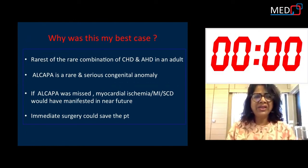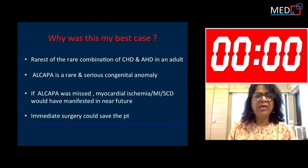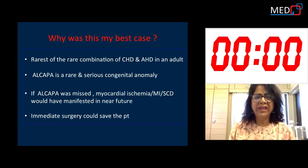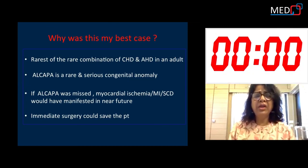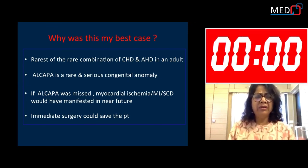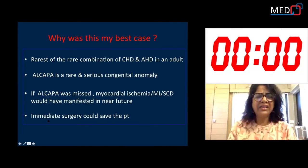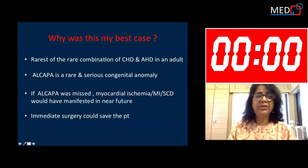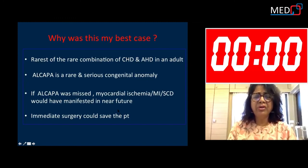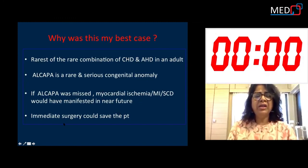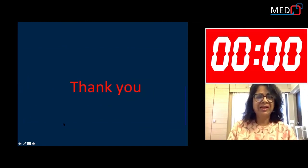To conclude, this is my best case because it represents the rarest combination of congenital heart disease and acquired heart disease in an adult. ALCAPA is a very rare congenital anomaly with serious negative consequences. Had I missed ALCAPA in this case — as frequently happens on echocardiography — this patient would have developed myocardial ischemia, MI, or sudden cardiac death in the near future. Instead, we were able to intervene with immediate surgical treatment and save the patient. Thank you.